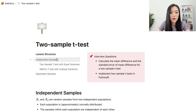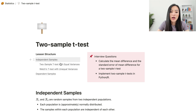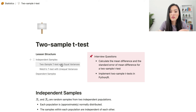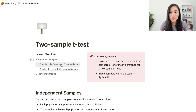That's it for this lesson. We went over using the t-test for independent samples as well as dependent samples. For independent samples there are two scenarios: either the two groups have equal variances or they have unequal variances. I will see you in the next one.